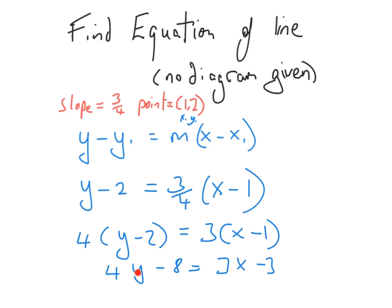After multiplying we get 4y minus 8 — so 4 times minus 2 is minus 8 — and then 3x minus 3. We could leave it like this, but when asked for the equation of a line, you're expected to put it in a certain format: x first, followed by y, followed by a number, equal to 0. So we reorder these terms accordingly.